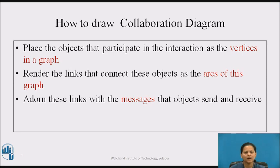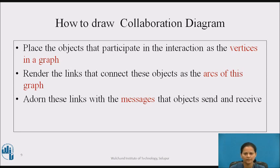To indicate how one object is linked to another, we attach a path stereotype to the far end of a link, such as 'local', indicating that the designated object is local to the sender. To indicate the time order of a message, we prefix the message with a number starting with the message numbered 1, increasing monotonically for each new message in the flow of control as 2, 3, and so on.